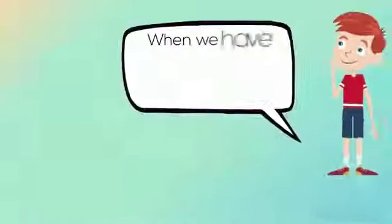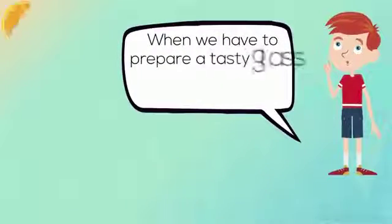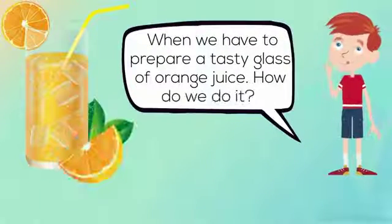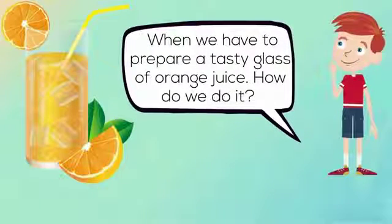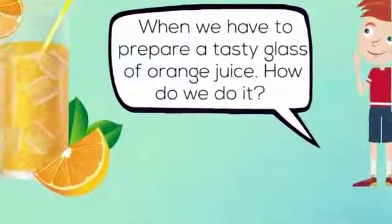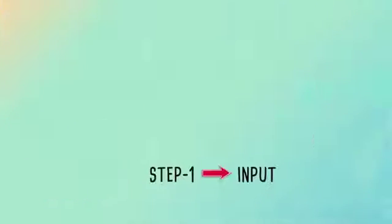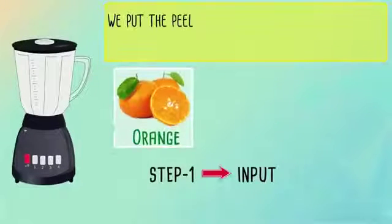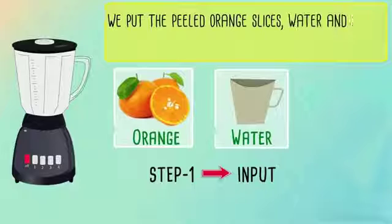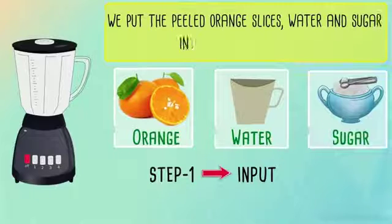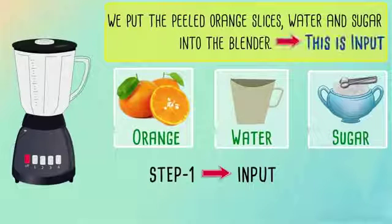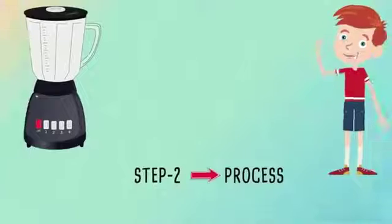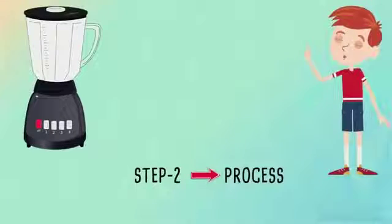When we have to prepare a tasty glass of orange juice, how do we do it? Step 1 is the input. We put the peeled orange slices, water and sugar into the blender. This is input.